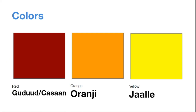Red is either Gudud or Asan. Gudud or Asan. Orange is Oranji. Oranji. And yellow is Jale. Jale.